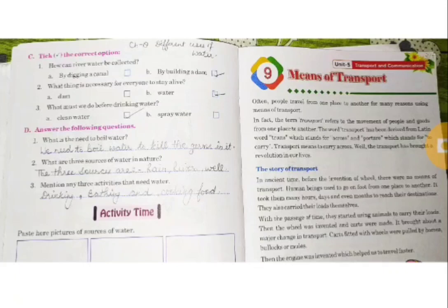Second is, what are the three main sources of water in nature? This answer is, three main sources are rain, river, and well.